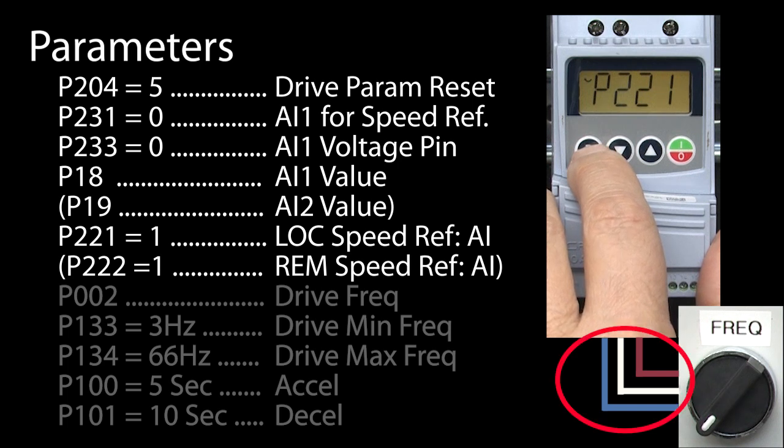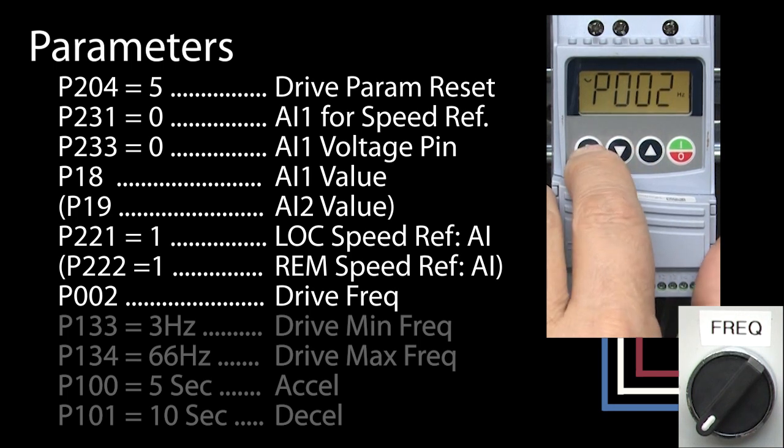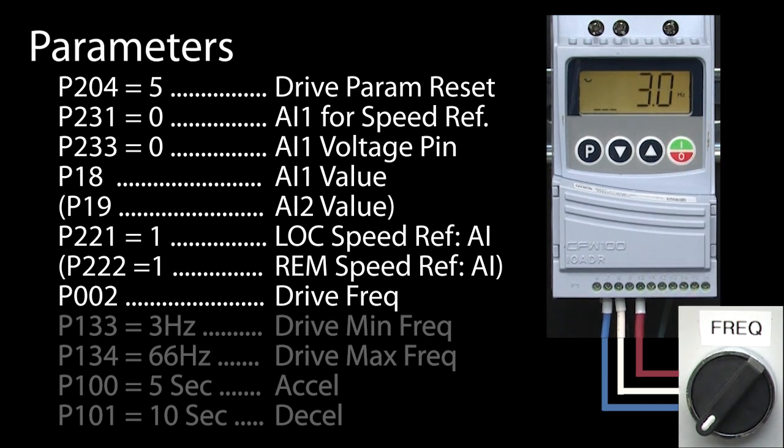So all we did was wire the potentiometer to the analog voltage input and change one parameter. I am going to scroll back to parameter 2 so we can see the drive's frequency and double-check that the potentiometer is all the way counterclockwise, which we know is zero. I will hit run, and the drive goes to its min speed, which we can change in parameter 133.